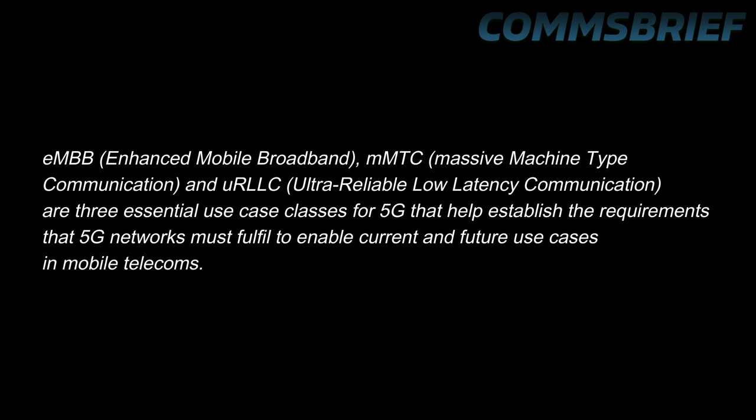eMBB Enhanced Mobile Broadband, mMTC Massive Machine Type Communication, and URLLC Ultra Reliable Low Latency Communication are three essential use case classes for 5G that help establish the requirements that 5G networks must fulfill in order to enable current and future use cases in mobile telecoms.